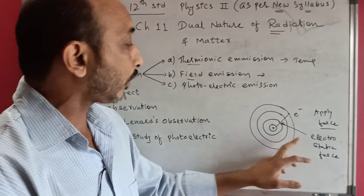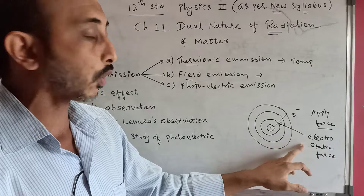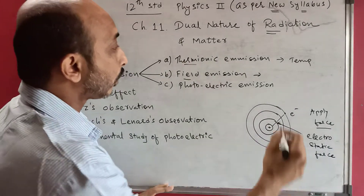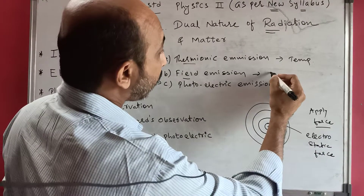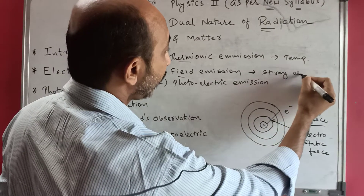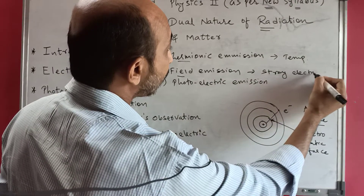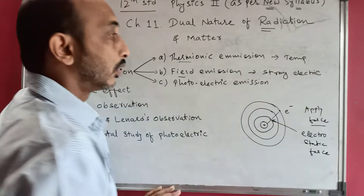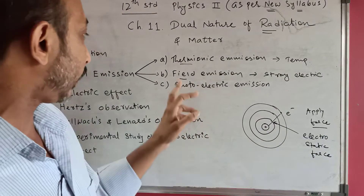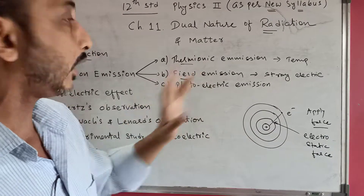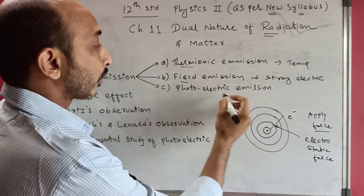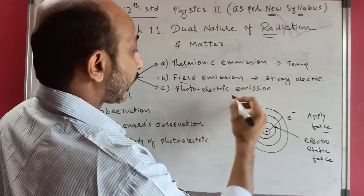Field emission: there are two fields — electric field and magnetic field — but here only electric field is relevant. We apply a strong electric field to free the electron from the nucleus. That is called field emission.